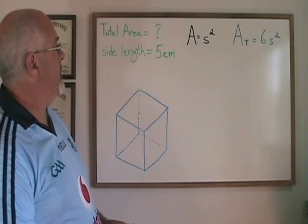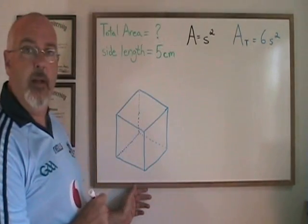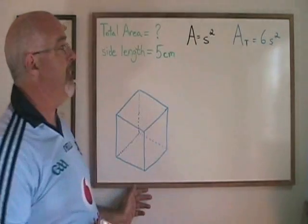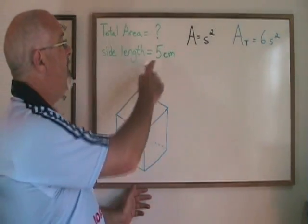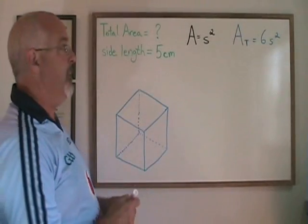Let's look at a couple of examples. In this case we are asked for the total area and we are given a side length of five centimeters. So let's plug a side length of five into the total area of the cube formula.